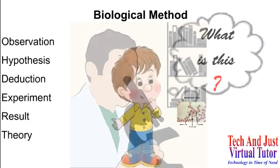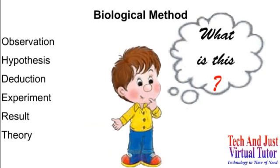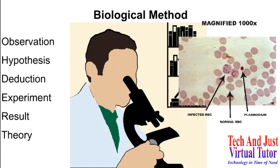You can understand that a thought begins to develop in our mind when we observe some unique or new thing. So the same thing happened with this doctor as well while he was examining this blood sample. And here, the new or unique thing that he observed were these tiny creatures in the blood sample. So accordingly in the biological method, the first step would be observation so that a new objective can take place.